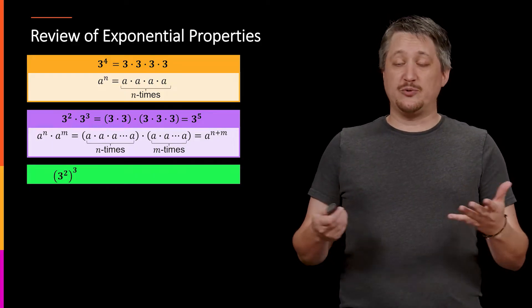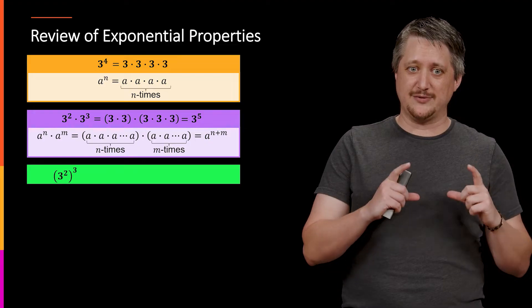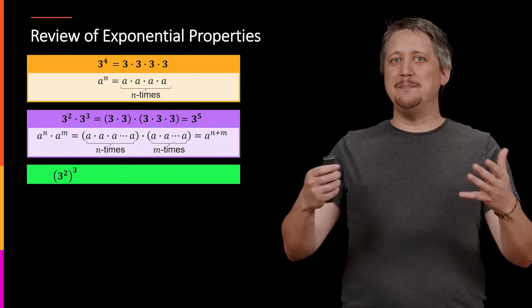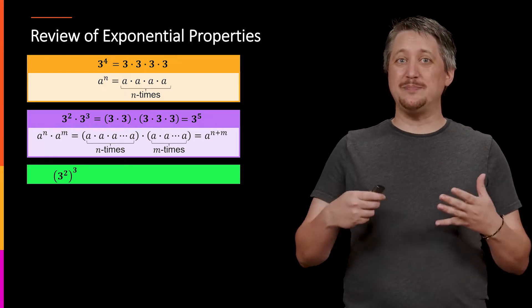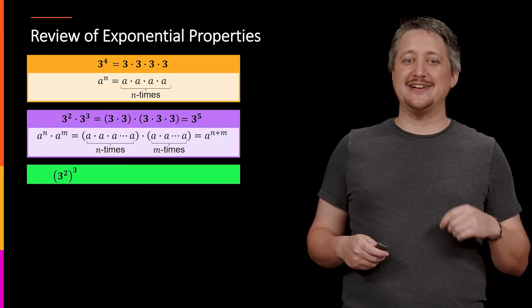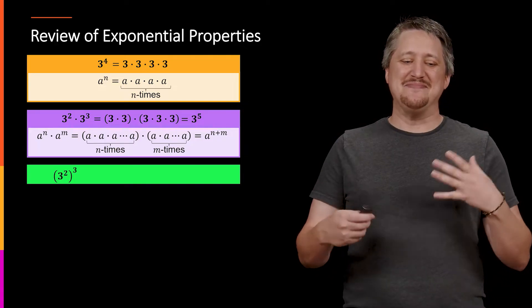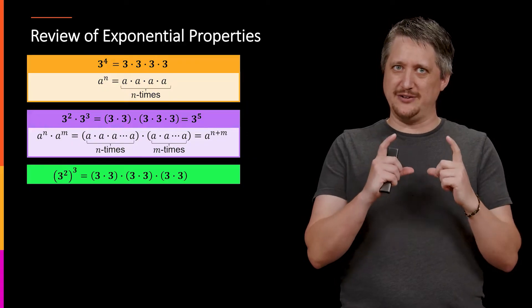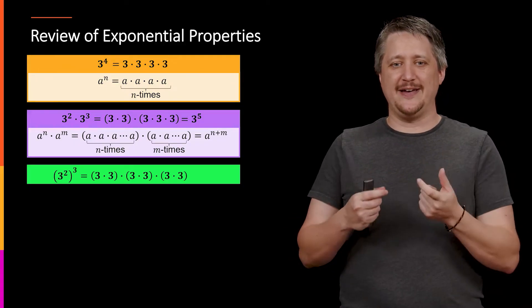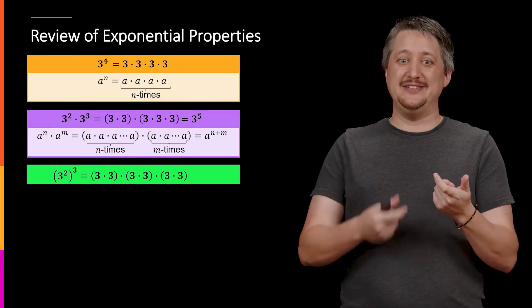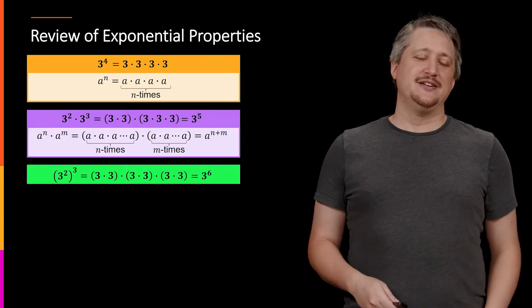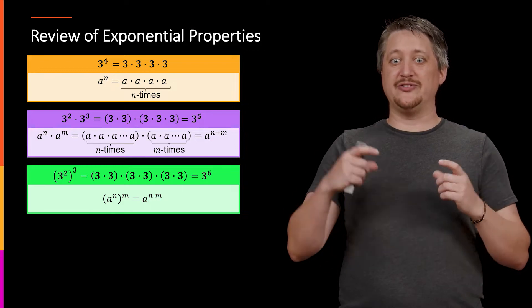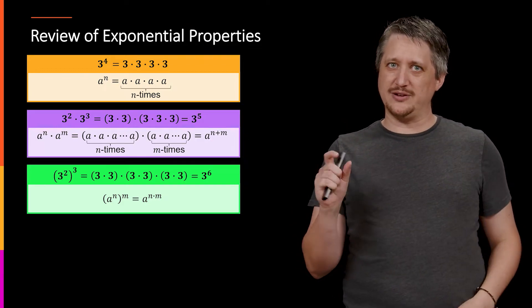So if we have three squared to the third — so we're applying an exponent to something that already has an exponent — this is called exponentiating. We would say we took three squared and exponentiated it by three. This takes the three squared piece inside the parentheses and multiplies it against itself three times, meaning we have two threes, three times, which is just six threes. So in general, a to the n all to the m equals a to the n times m.